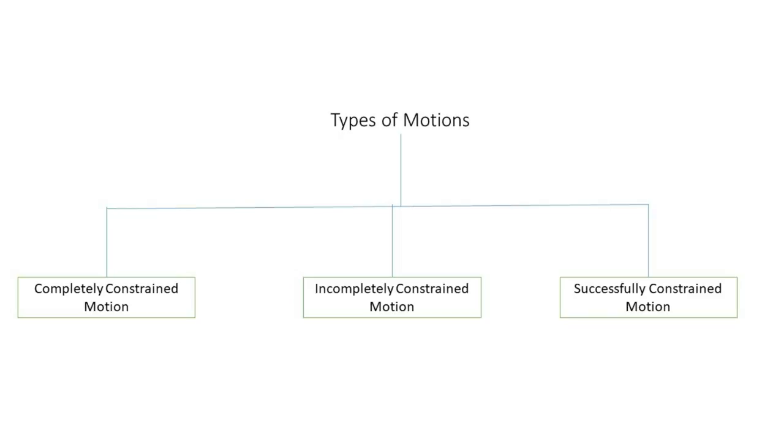Basically there are three types of motions: completely constrained motion, incompletely constrained motion, and successfully constrained motion. Let's see one by one with their animation.